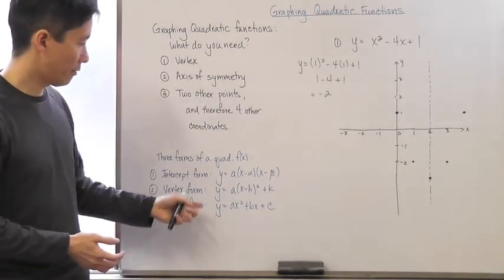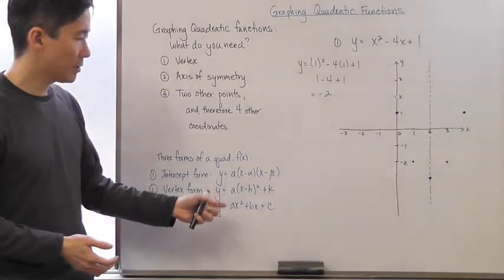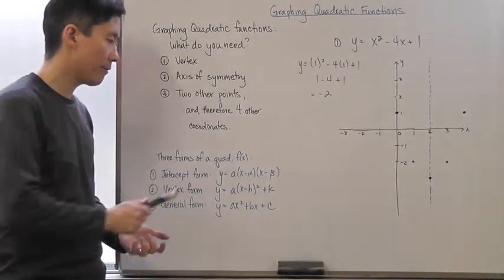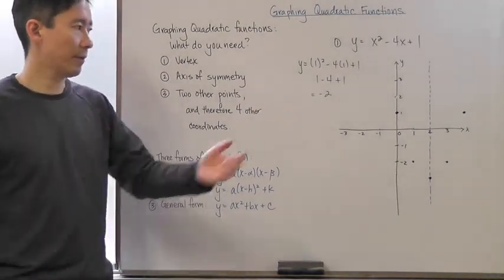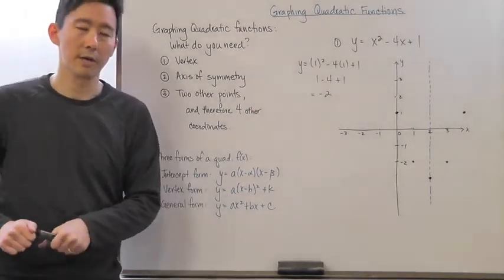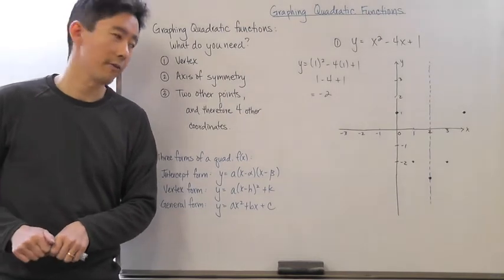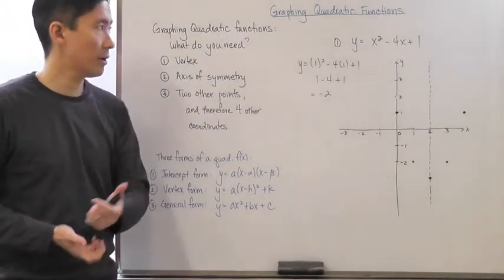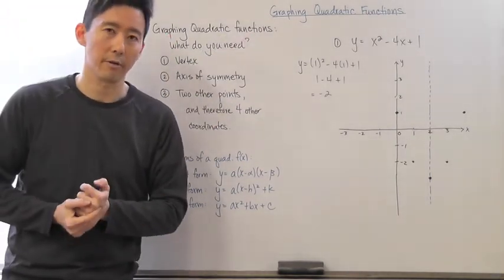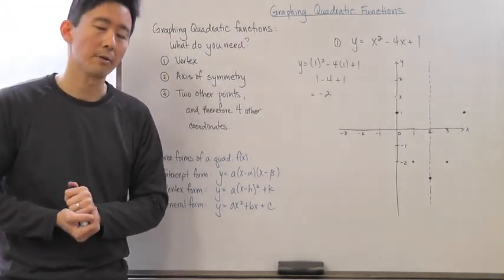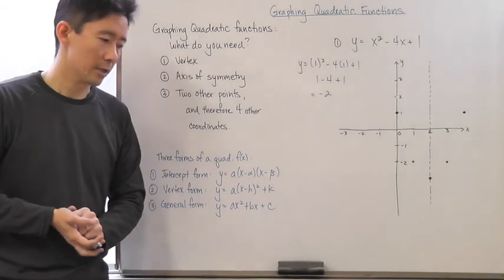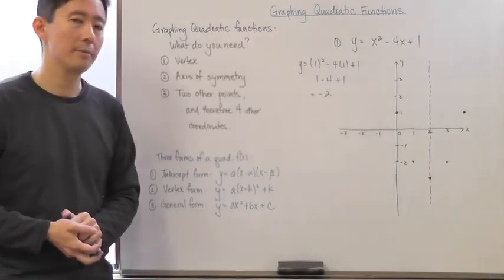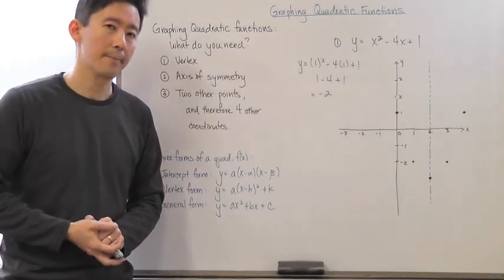The three forms are very useful. If you can recognize the intercept form, the vertex form, and the general form, you'll have a clear strategy to find the vertex, axis of symmetry, and additional coordinates to graph any quadratic function. Give it your best shot — see you next time!